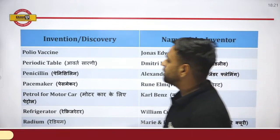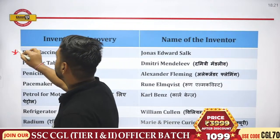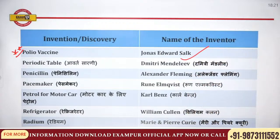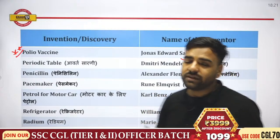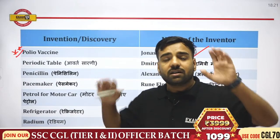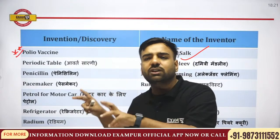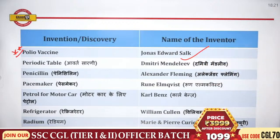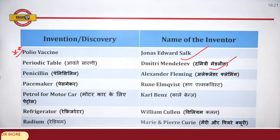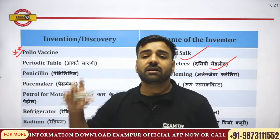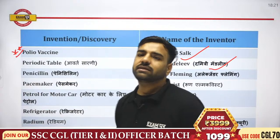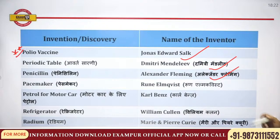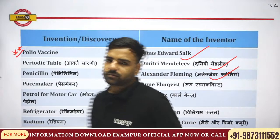Polio vaccine is again important and asked many times in the examination. Polio vaccine was discovered by Jonas Edward Salk. All the inventions and discoveries here are repeatedly asked in exams. Periodic table was discovered by Mendeleev — same Mendeleev's periodic table we know from chemistry.